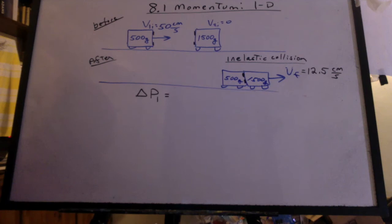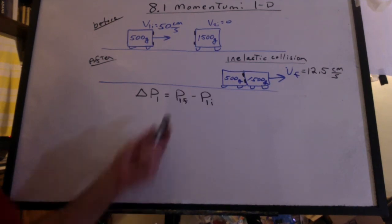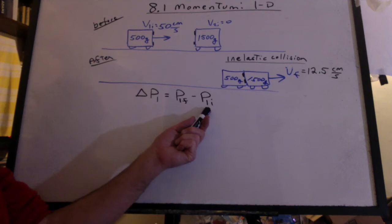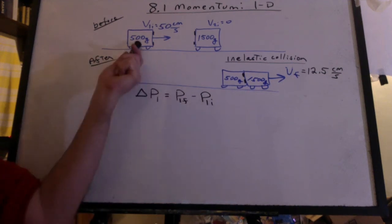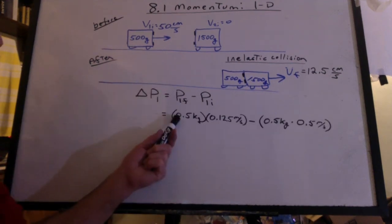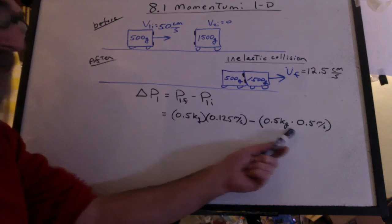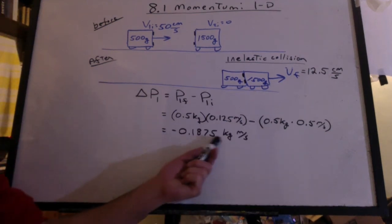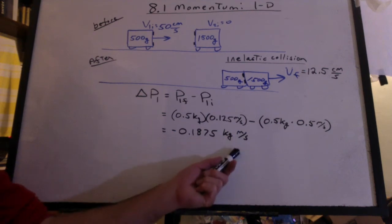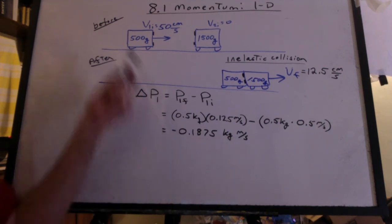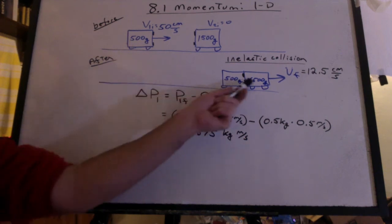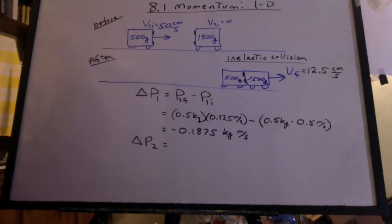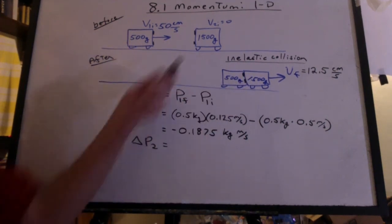Let's find the change in momentum of cart one. It's going to be the final momentum minus the initial momentum of the first cart. So the final momentum minus the initial momentum gives us a negative 0.1875 kilogram meters per second. That's how much momentum this object lost when it struck the big one.